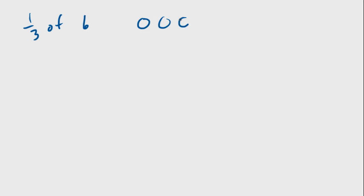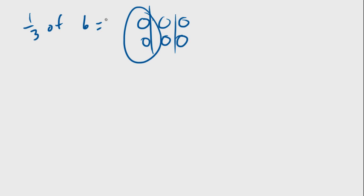We talked a little bit before about one-third of six. It's easy to draw six pieces and split them into thirds. What's one-third of six? Here's one-third — it equals two. Easy to do. But what happens if there's a bigger number?